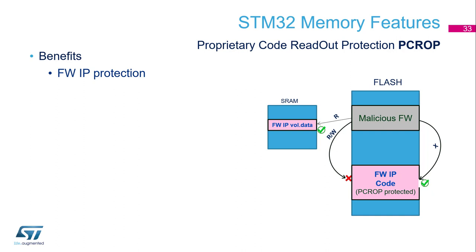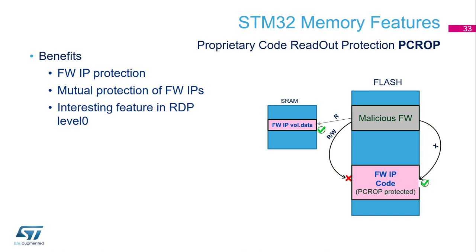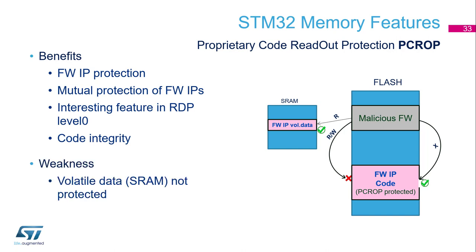The benefits of this mechanism: firmware IP protection — the code cannot be accessed even from the core or debugging link. Mutual protection: if you have different versions of PCROP regions, different firmware components can coexist but cannot access each other's content. An interesting feature at RDP level zero — meaning no security is otherwise activated — is that all flash access is free except for the PCROP region. So you can deliver firmware to collaborators and keep it completely hidden by PCROP.